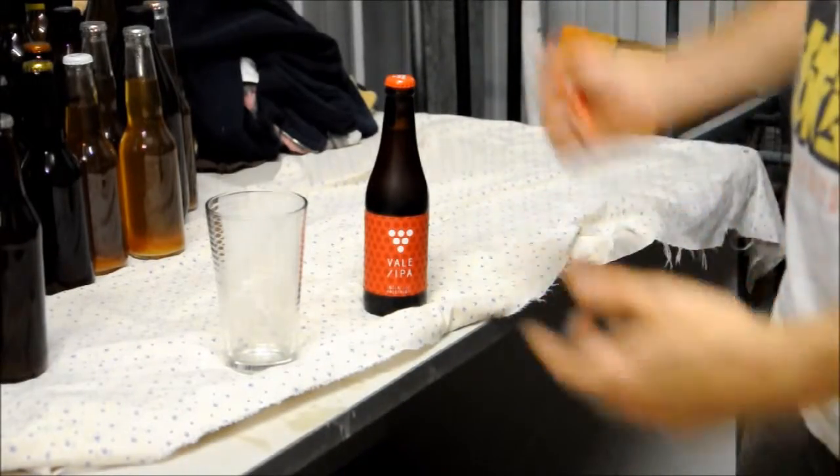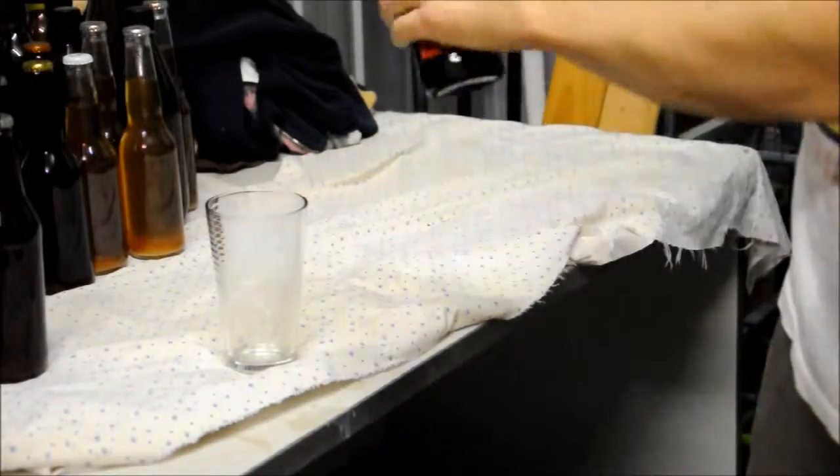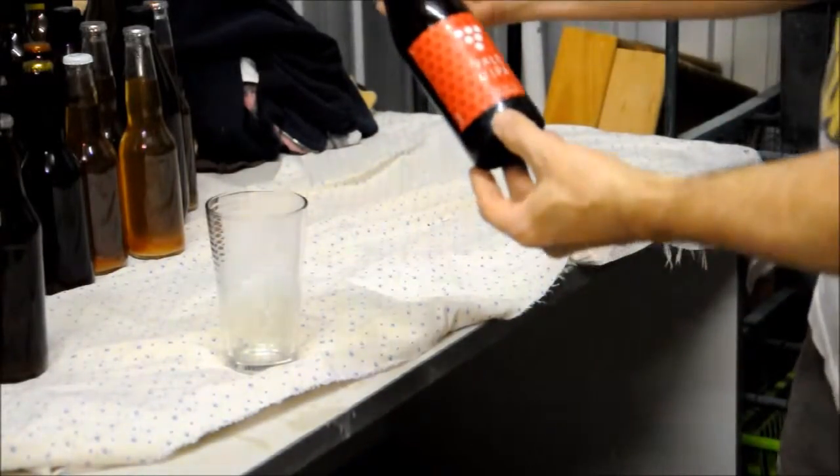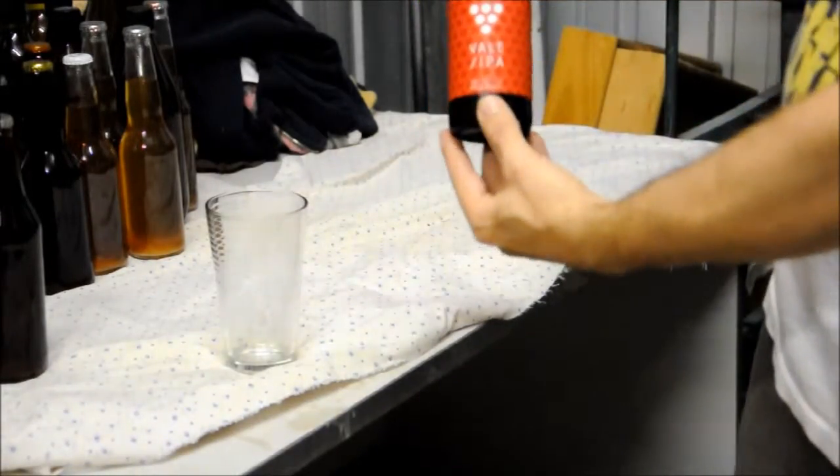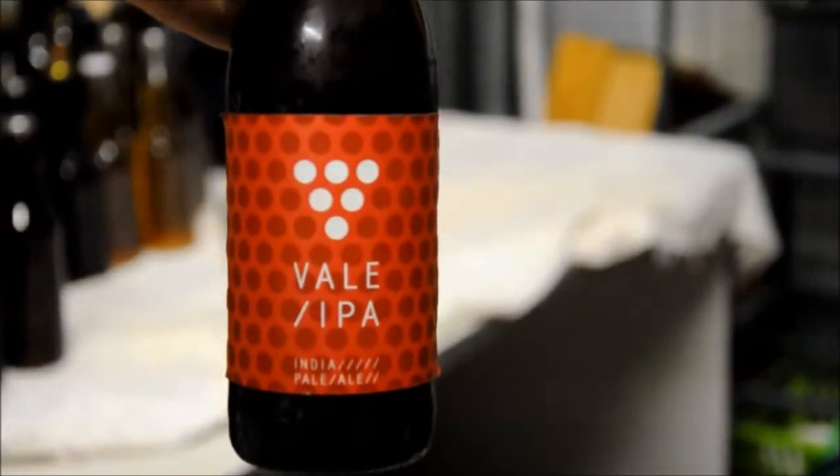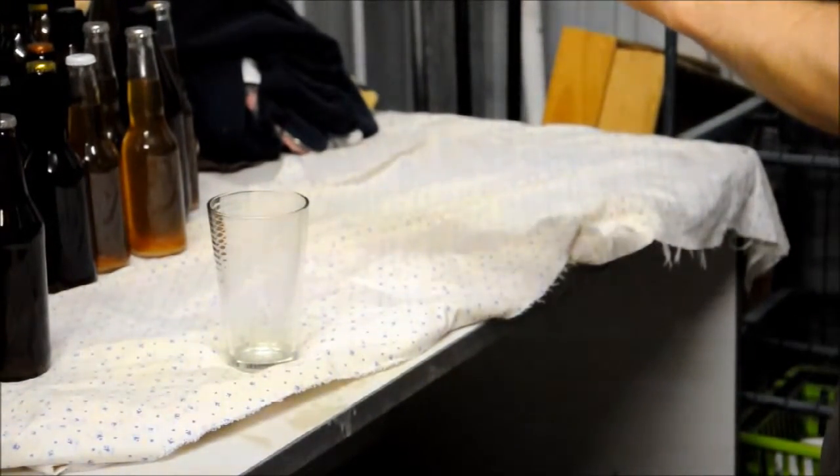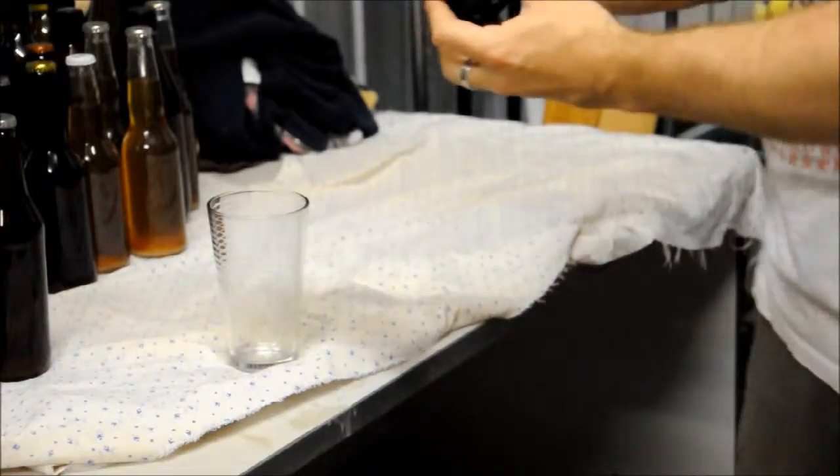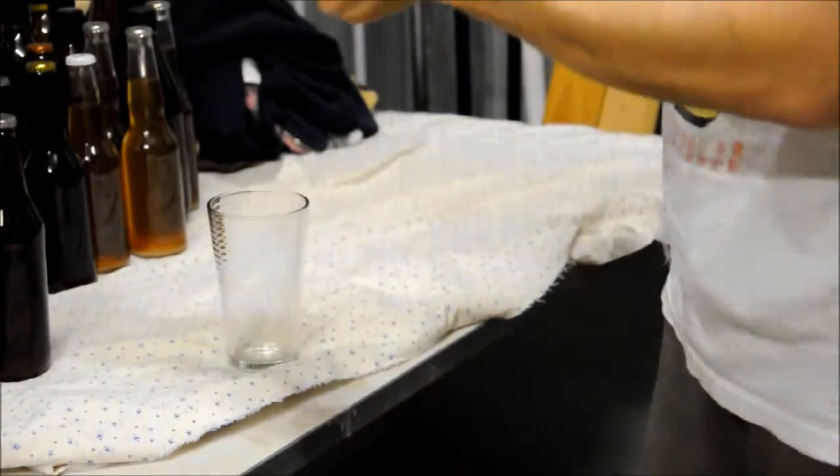This is a local beer. It's by a group called Vale Brewery down McLaren Vale in South Australia. It's their IPA. I'll just do a bit of a close-up for you. There we go, there's the IPA there. It's 5.5% alcohol.